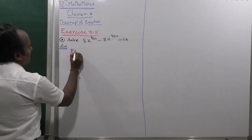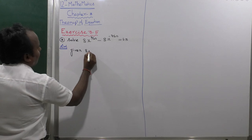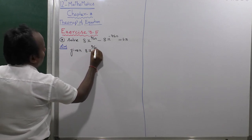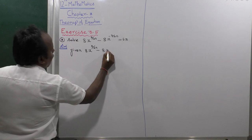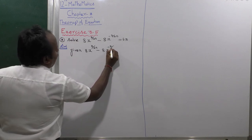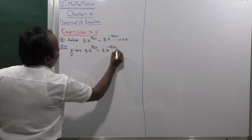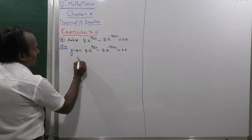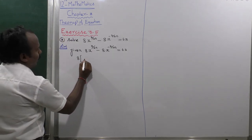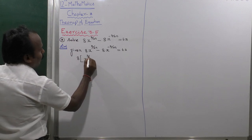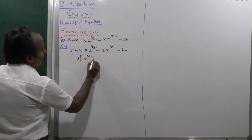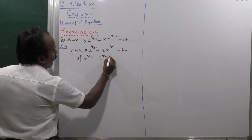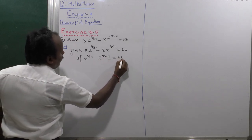So, the given values: 8x power 3 divided by 2n minus 8x power minus 3 divided by 2n is equal to 63.